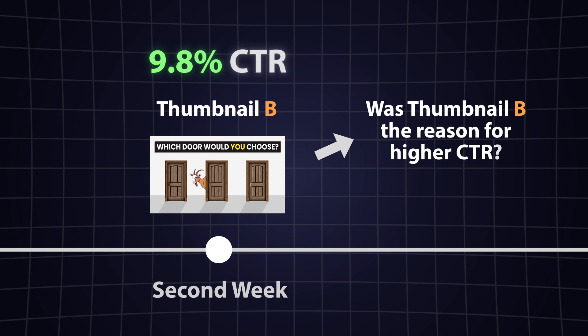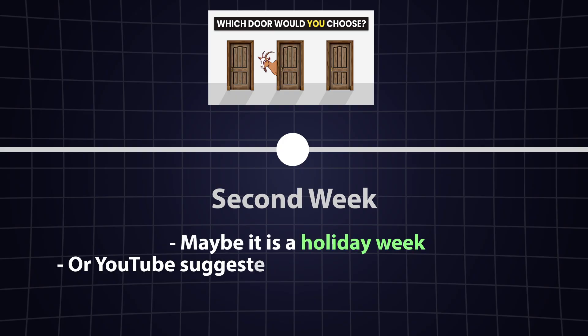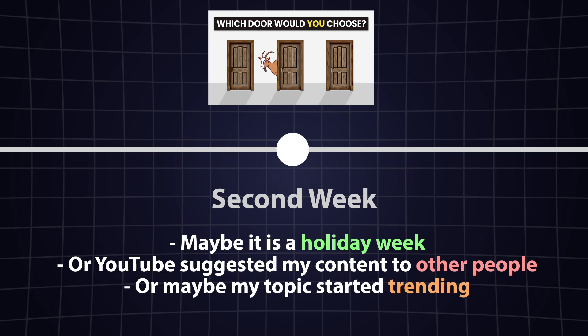But can I really say that B caused the increase? Not necessarily, because other factors might have changed. Maybe the second week was a holiday, or YouTube recommended my video more, or maybe my topic just started trending.